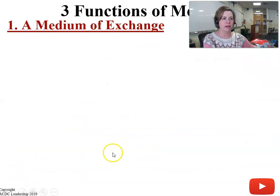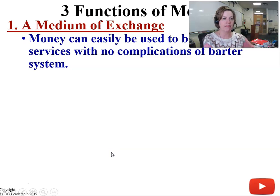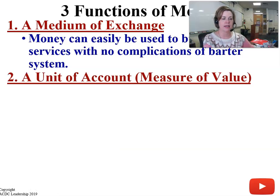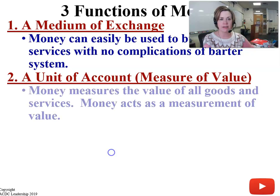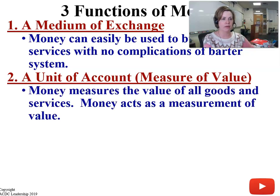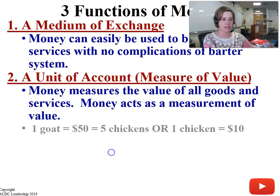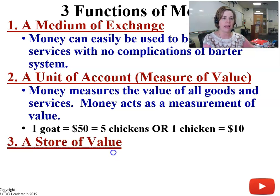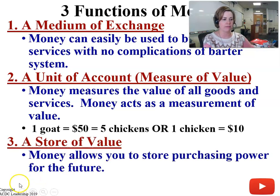There are three functions of money. A medium of exchange — we use money to buy goods and services. A unit of account, or a measure of value — money measures the value of all goods and services. And also, we use it as a store of value; money allows us to store purchasing power for the future.